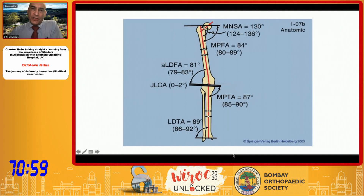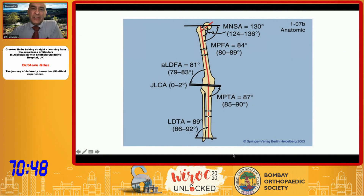The anatomic angles are different in the femur. For the tibia, the anatomic and mechanical axis are fairly similar — typically around two millimetres different, but they are parallel, so to all intents and purposes they are used as fairly similar.